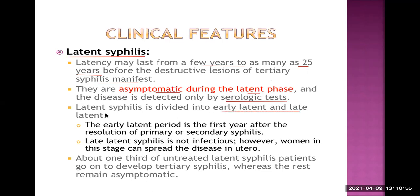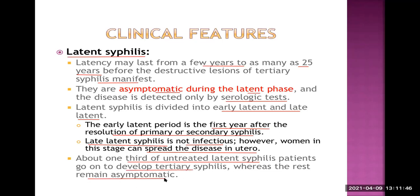Latent syphilis is divided into early latent and late latent phases. The early latent period is the first year after resolution of primary or secondary syphilis. Late latent syphilis is not infectious, though women in this stage can still spread the disease in utero. About one-third of untreated latent syphilis go on to develop tertiary syphilis, while the rest remain asymptomatic for a longer duration.